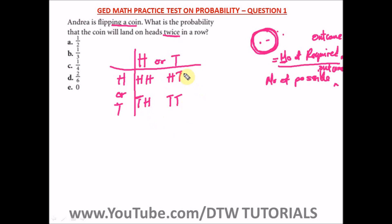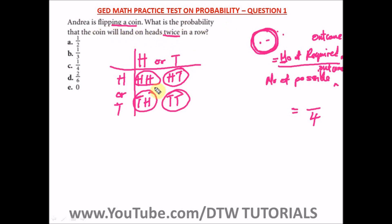If the first flip is a tail, the second flip gives tail-head or tail-tail. So the possible outcomes are: head-head, head-tail, tail-head, and tail-tail — four possible outcomes in total. The question asks for the probability of landing on heads twice. In our combination we only have head-head once, so the required outcome is 1. Therefore, the probability is 1 out of 4. The correct answer is option C.